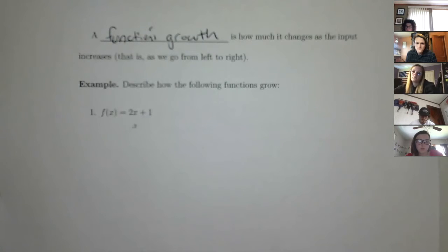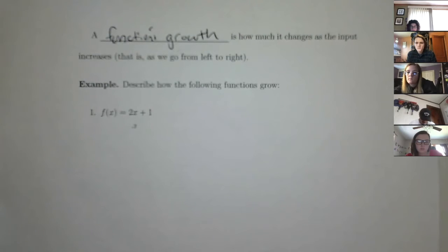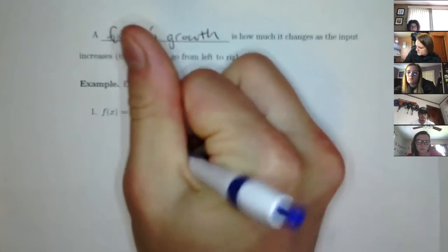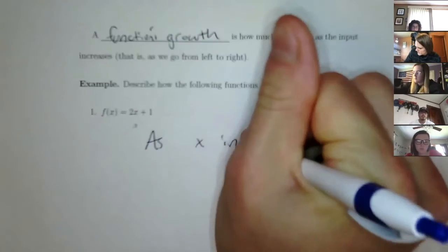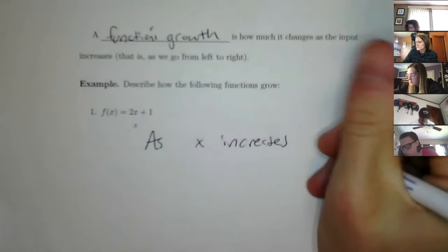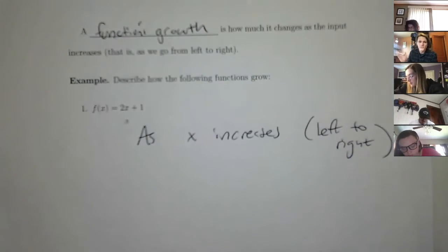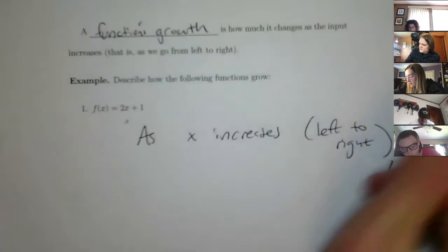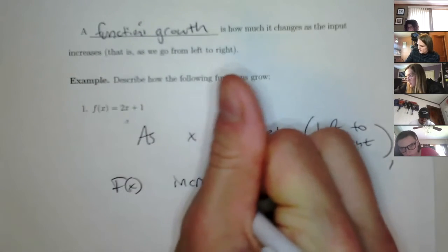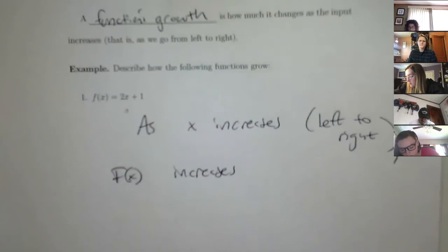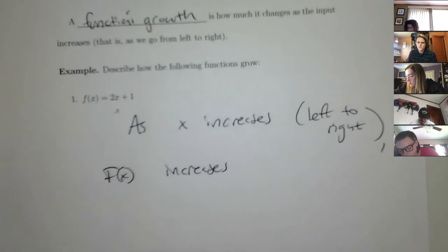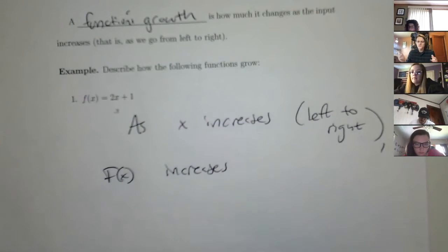And multiply it by 2? Yeah. So as x gets bigger, what is going to happen to the function? It's going to increase. So as x increases — and by increases, all you mean is going left to right if you're thinking of it graphically — f of x increases. I'm just saying that the function is increasing; the behavior is going up.